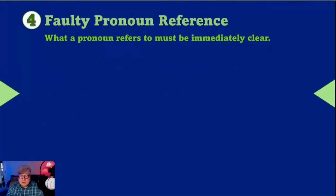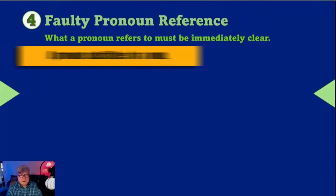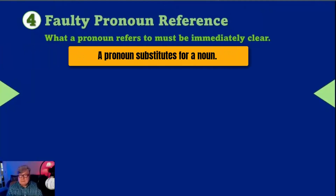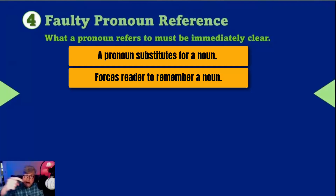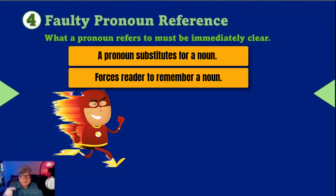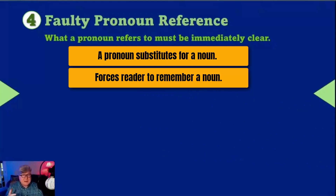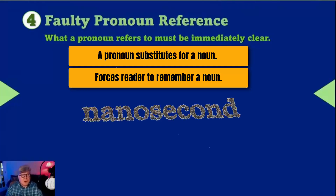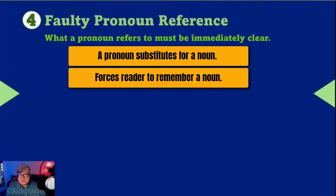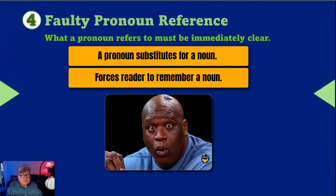Here's the big one — one of the most complex ones that we have: faulty pronoun reference. Think about what a pronoun does. A pronoun substitutes for a noun and forces your reader to think back to the noun it is replacing. That mental jump must take place instantaneously, or your reader becomes confused. In other words, if your reader has to pause for more than a nanosecond to figure out the antecedent of that pronoun, you're in trouble.